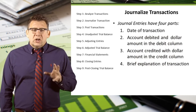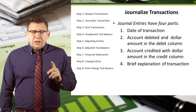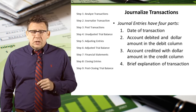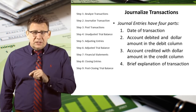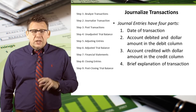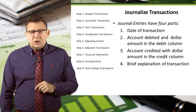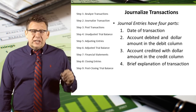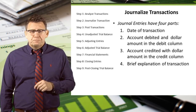Journal entries have four parts: a date of the transaction, the account debited and the dollar amount debited, the account credited and the dollar amount of the credit, and finally a brief explanation of the transaction.